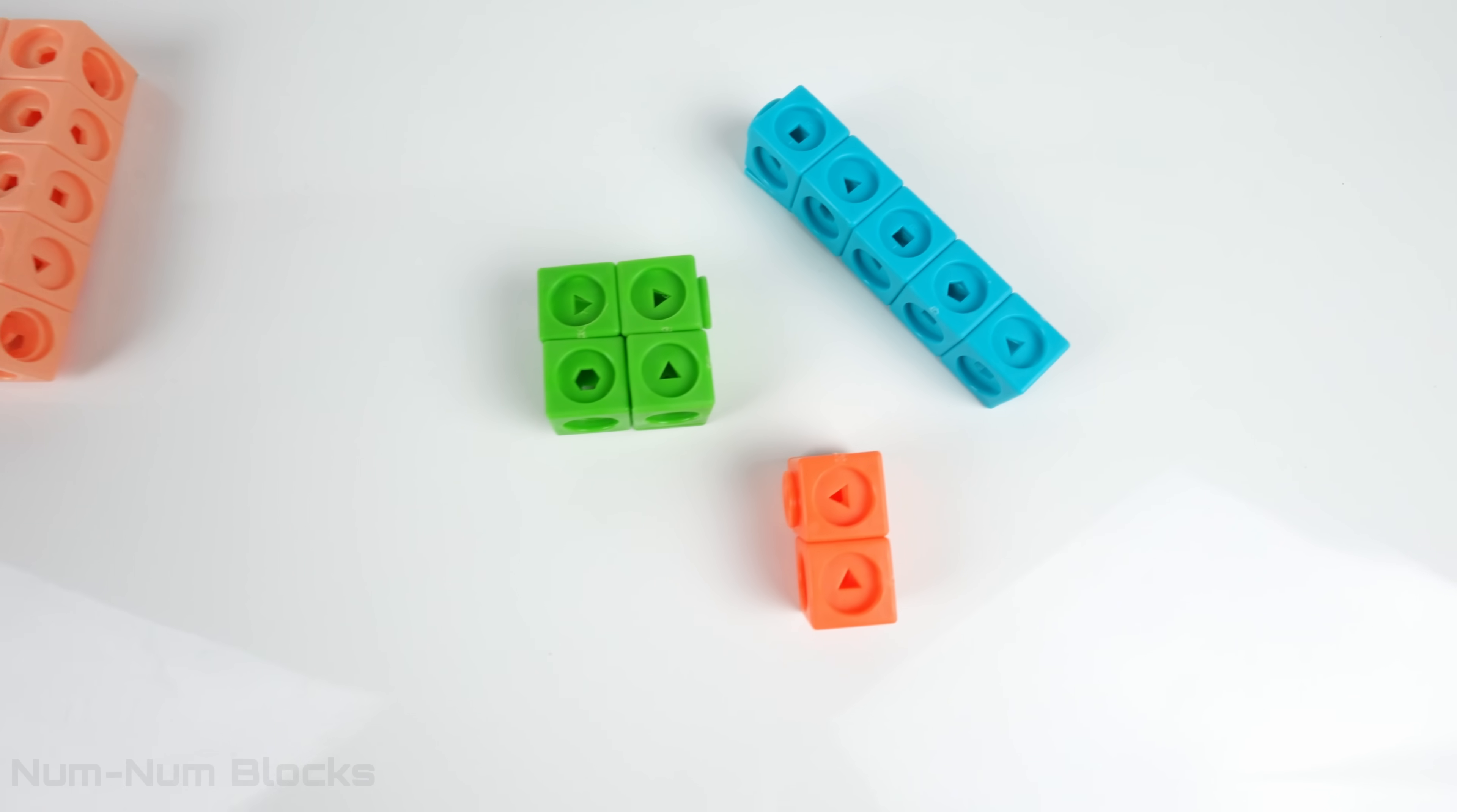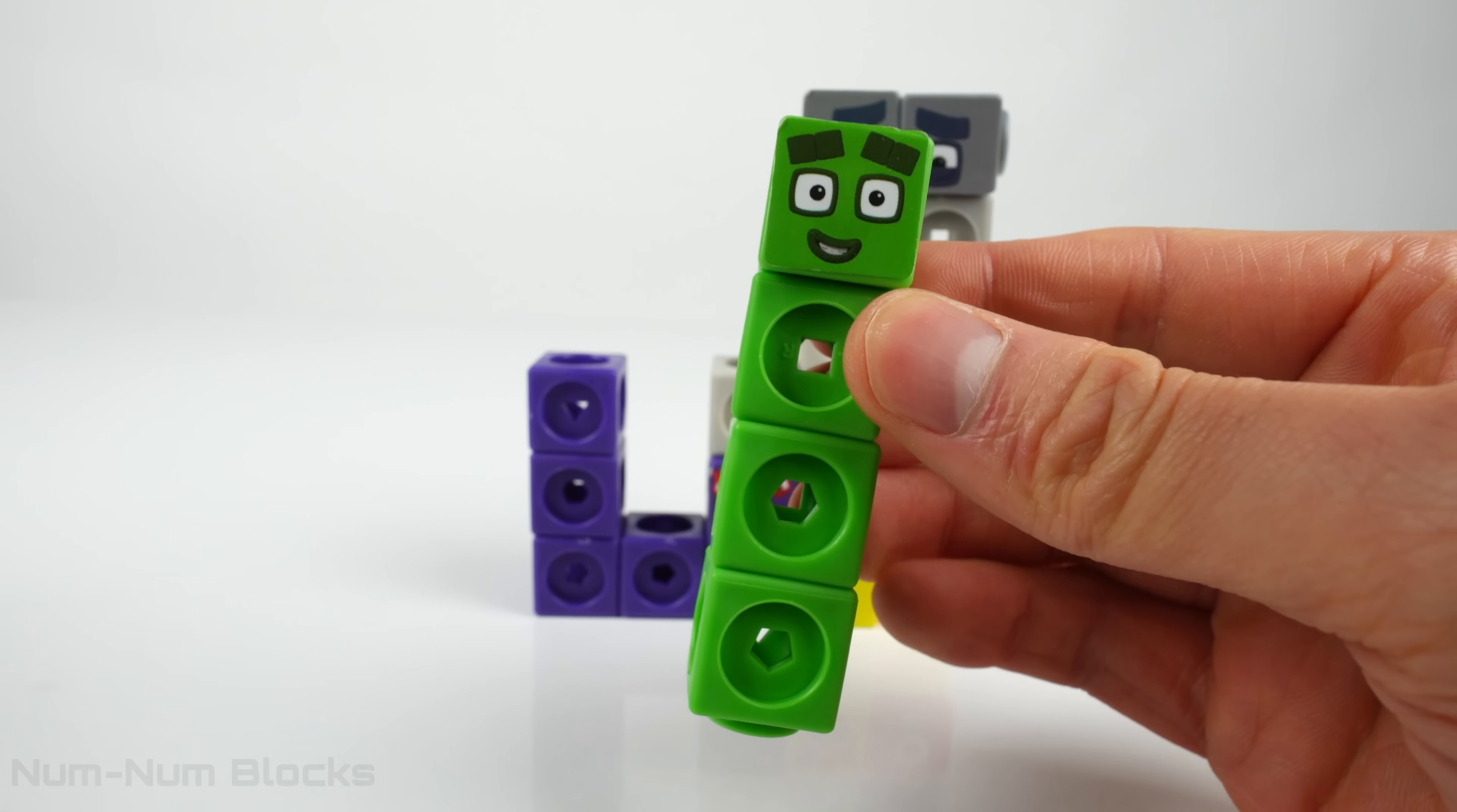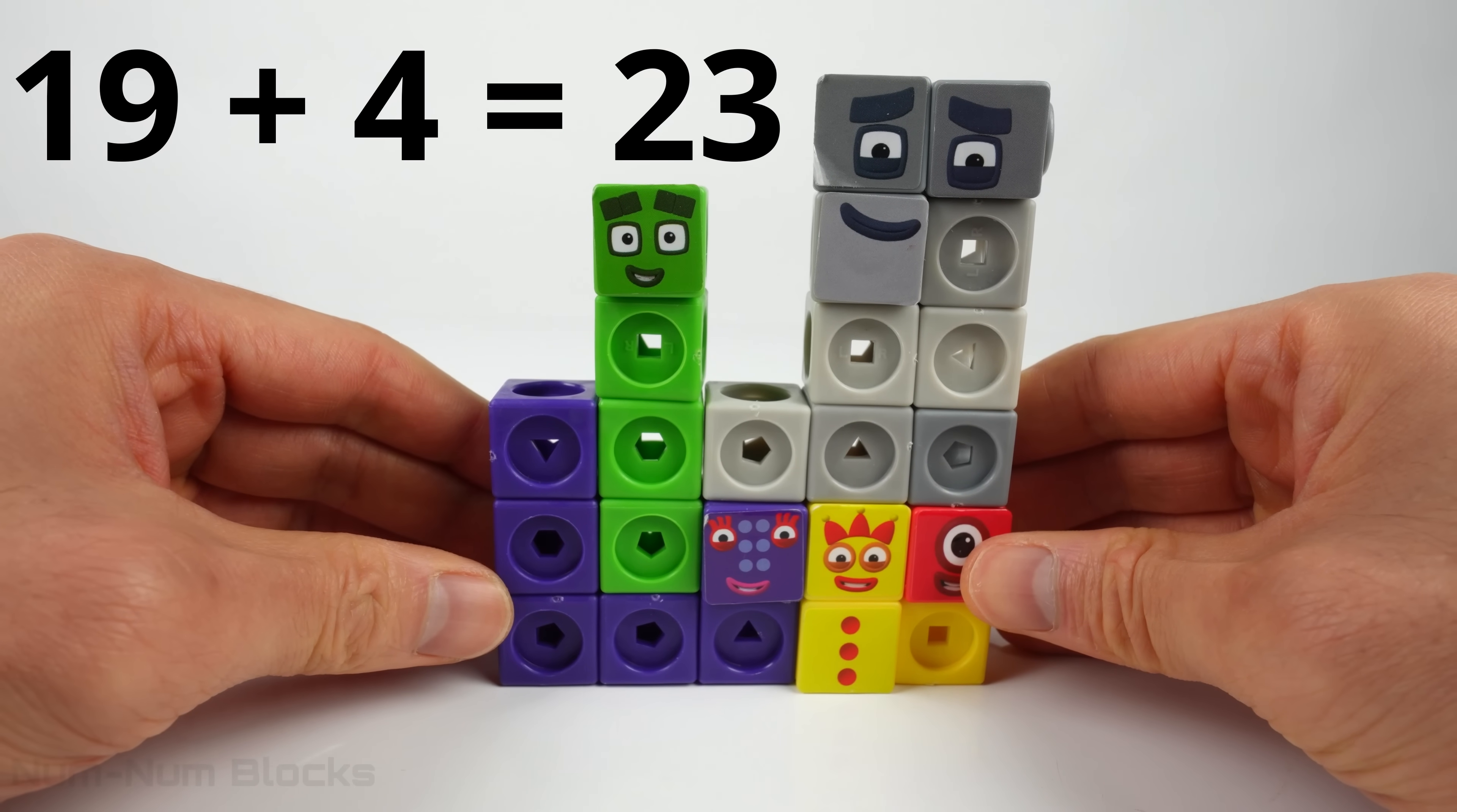There are 3 more numbers to go! Let's pick the green square. It's our friend 4! Let's make 4 stand tall. Now 4 is a 4 by 1 rectangle. 19 plus 4 equals what number? It equals 23!